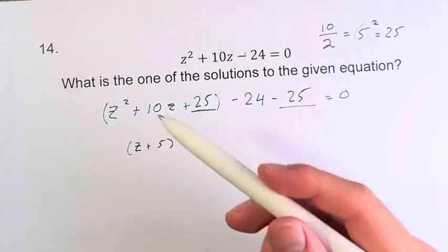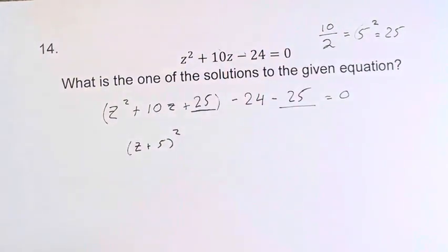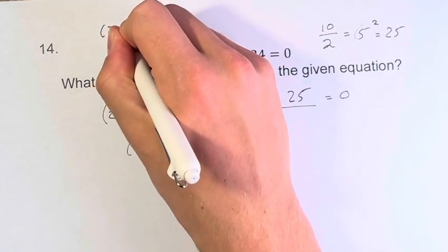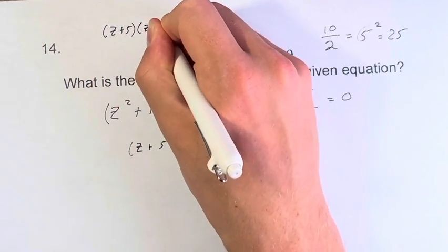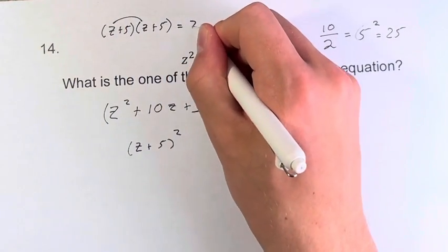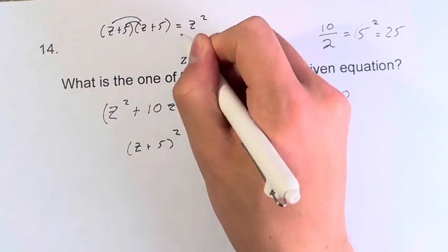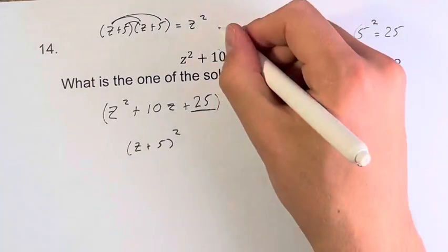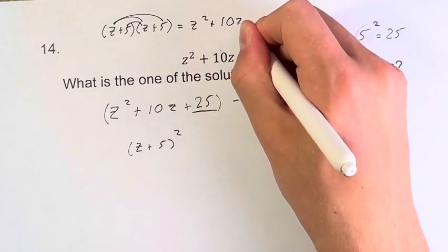Just to check this again, we would get z plus 5 times z plus 5. If we want to distribute this, we get z times z is z squared, plus 5 times z, plus another 5 times z...